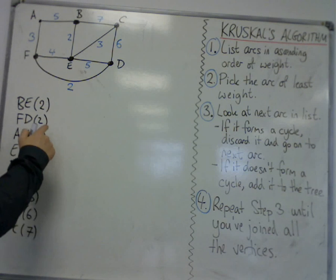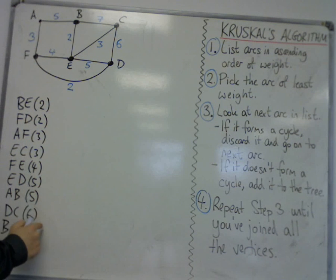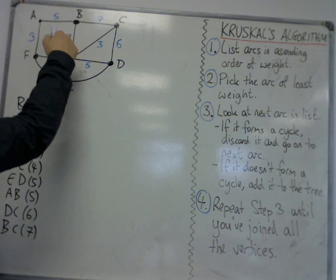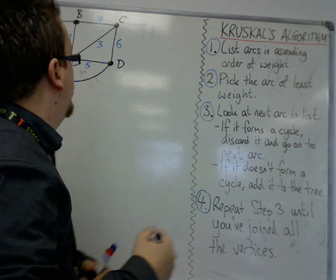Usually a good idea at this point to make sure I've got the same number of edges here as I do actually in the graph. 1, 2, 3, 4, 5, 6, 7, 8, 9. 1, 2, 3, 4, 5, 6, 7, 8, 9. So I've got that sorted.